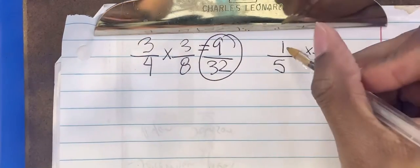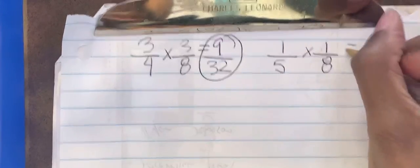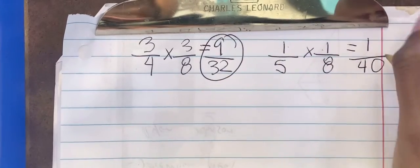So we're going to multiply the numerators. We're multiplying these fractions. So 1 multiplied by 1 is equal to 1. 5 multiplied by 8 is equal to 40.